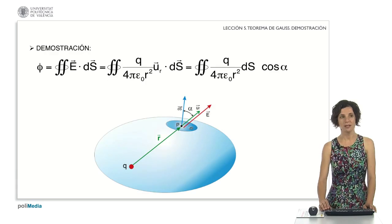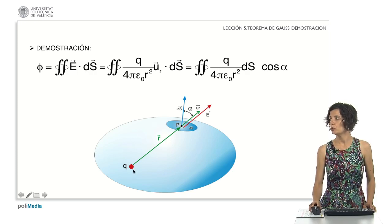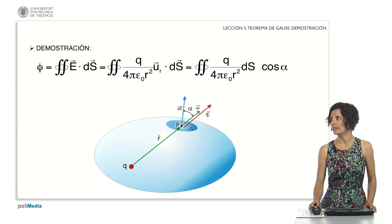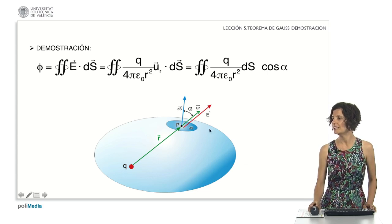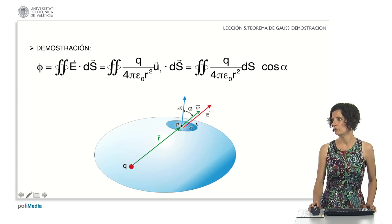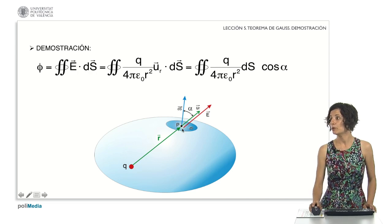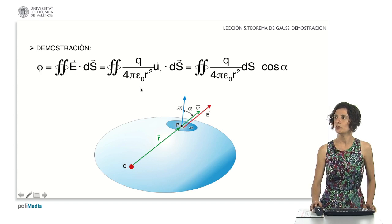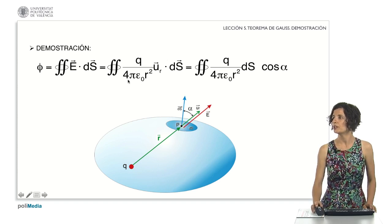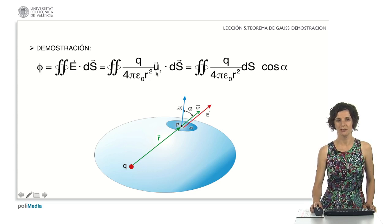Next, we are going to prove the law. Let's assume a positive point charge Q, and let's calculate the flux produced by its electric field through the closed surface we see on the screen. We choose an area differential, and at the central point B, we evaluate the electric field. The electric field created by a point charge at a distance r is Q divided by 4 pi epsilon sub zero r squared, multiplied by the unit vector u sub r in the radial direction.